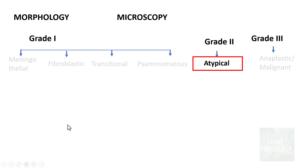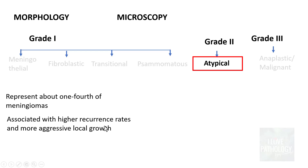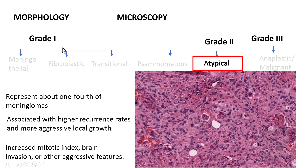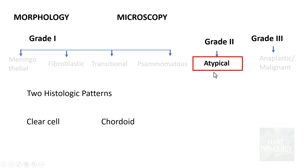Atypical meningioma represents around one-fourth of meningiomas and is associated with higher recurrence rates and more aggressive local growth than grade 1. An important feature is an increased mitotic index, and they can have brain invasion or invasion into the underlying bone, overlying dura, and brain parenchyma. Atypical meningiomas have two histological patterns: clear cell and cordoid.